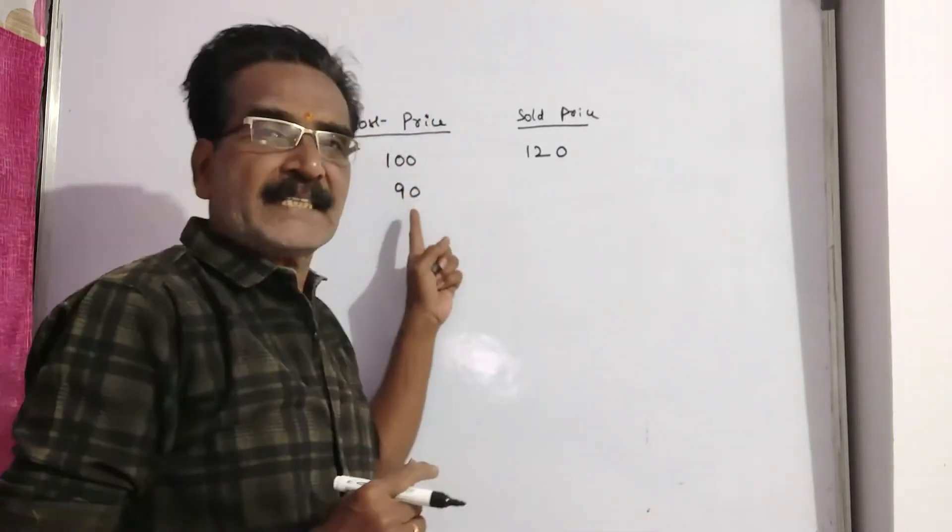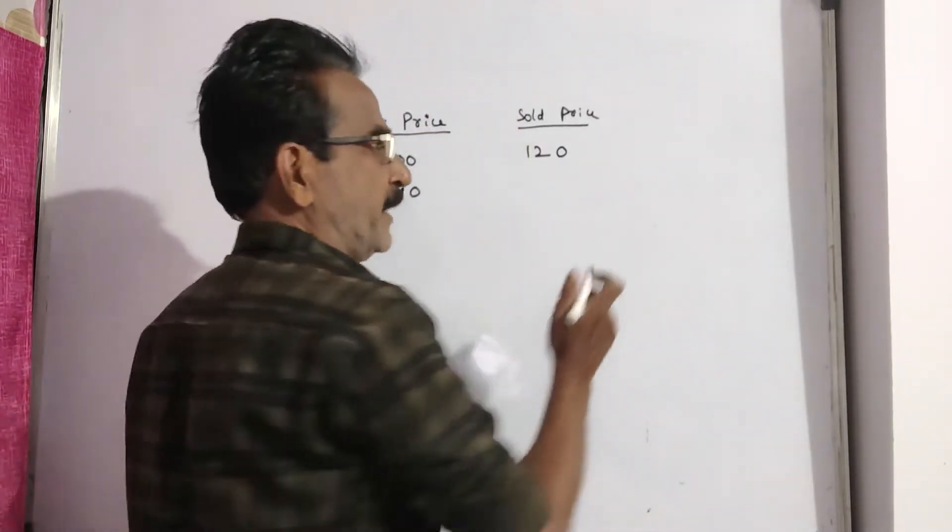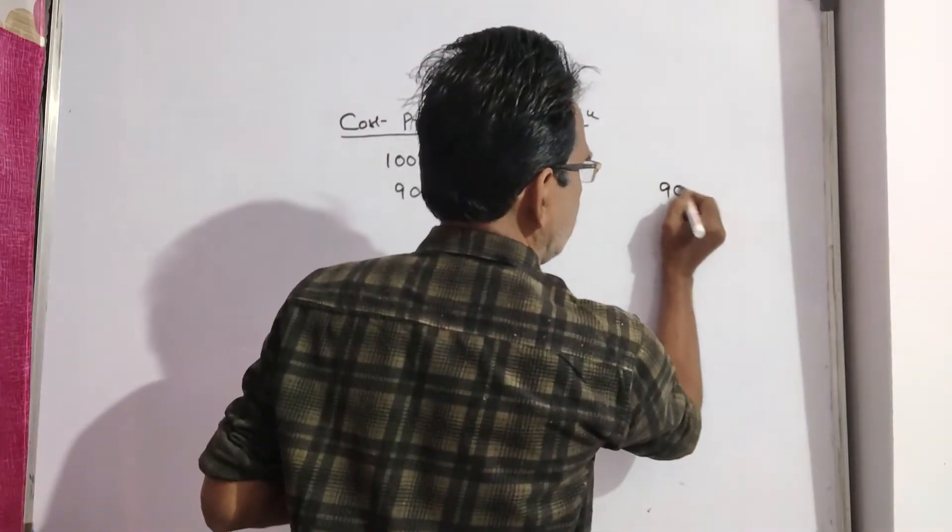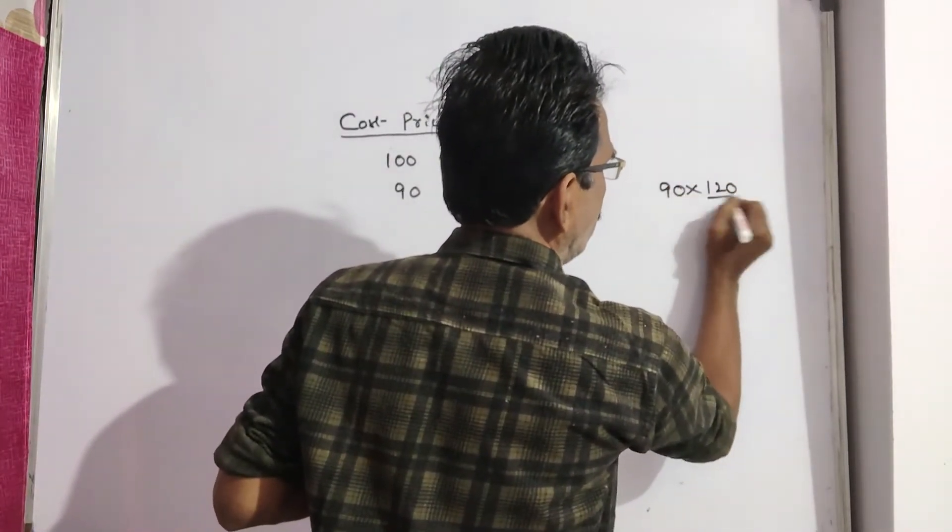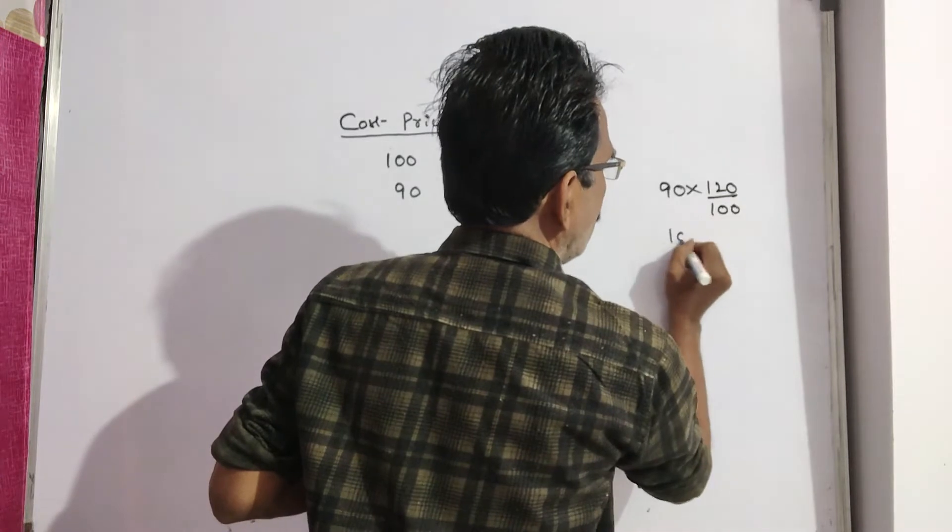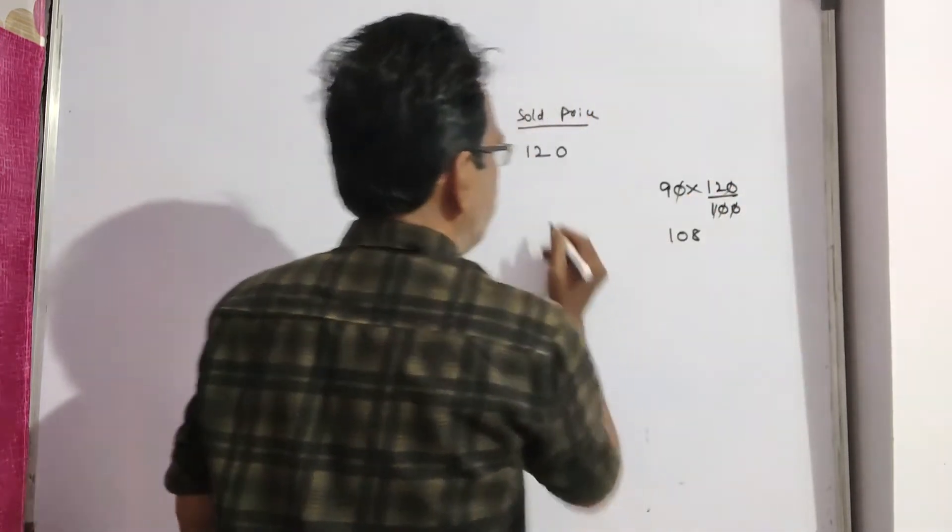So, if she makes a profit of 20% on 90, then the sold price must be 90 into 120 by 100, which is 108 rupees.